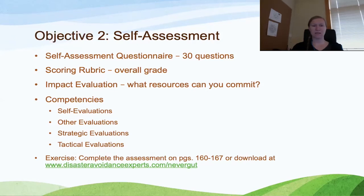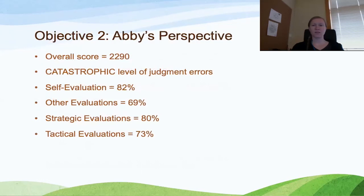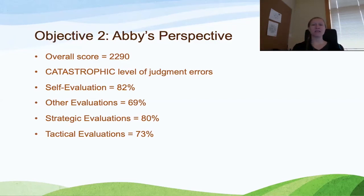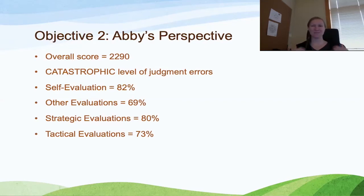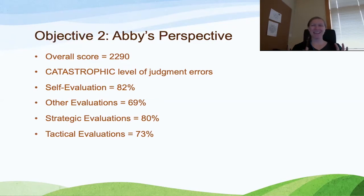You'll complete the assessment and identify the areas in which you or your organization are having the most struggles. For me, when I looked back and thought about all of the decisions made leading up to and during our stint as oyster farmers involved in this business venture with my family and all of the issues that we had, I came up with a score of 2,290, which indicates a catastrophic level of judgment errors.